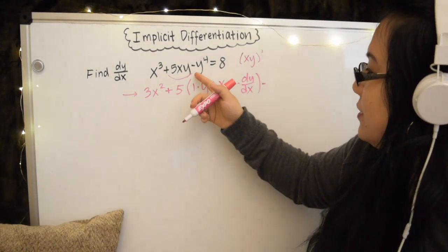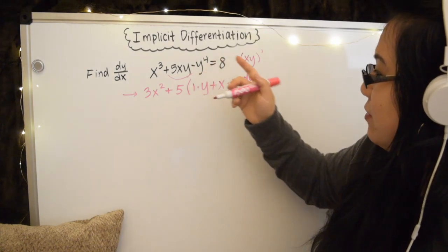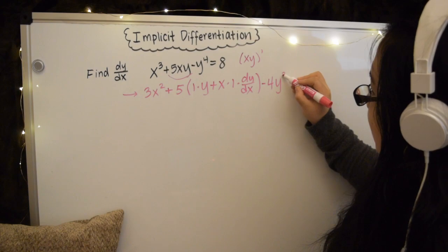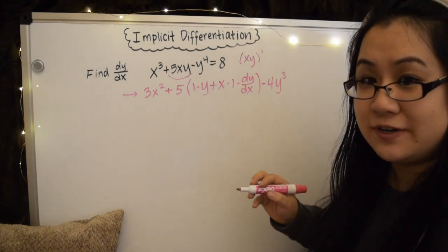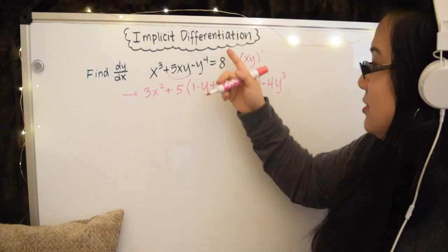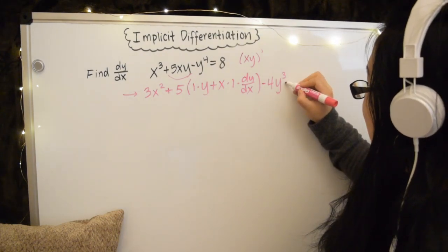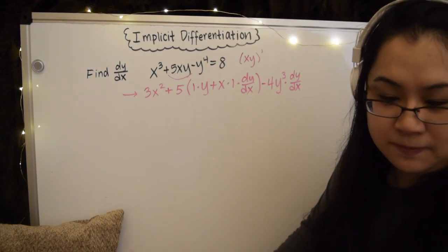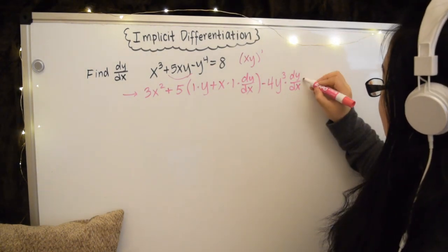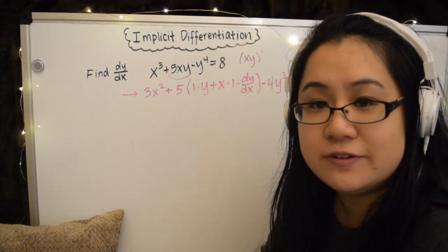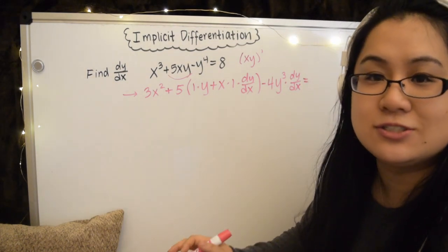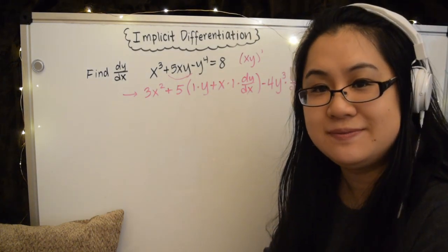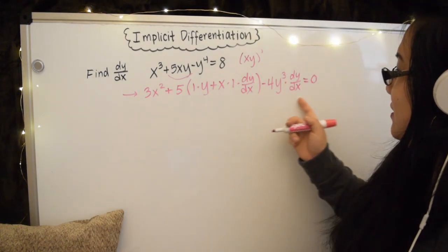Continuing, the derivative of minus y to the fourth is minus 4y cubed, right? But because this is the derivative of a term with y, we also need to tack on our dy/dx. And then equals the derivative of 8 with respect to x is just the derivative of a constant, so 0. Okay, so we have this.